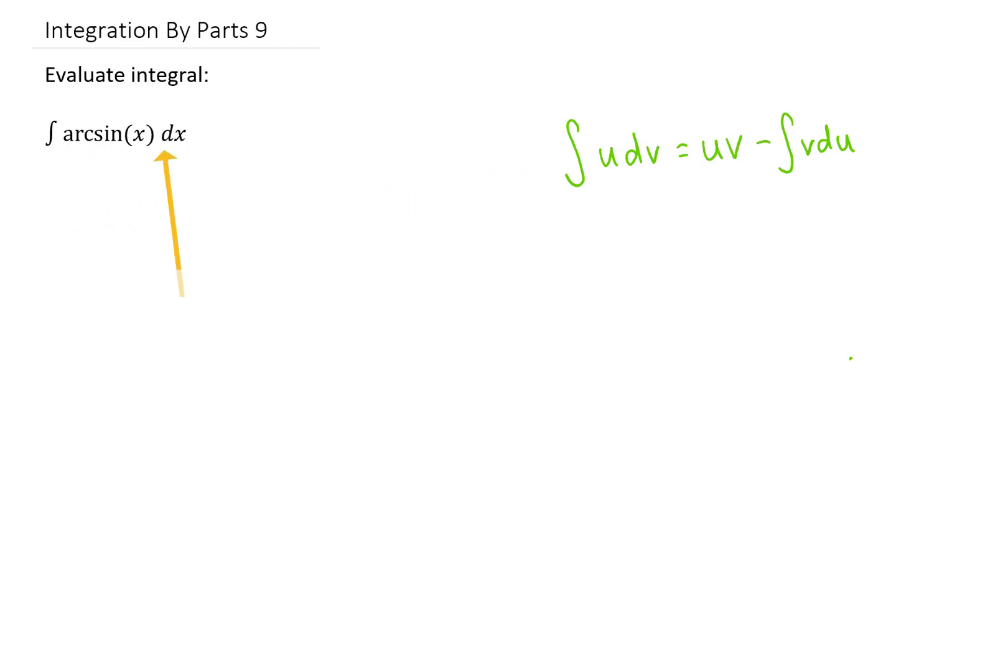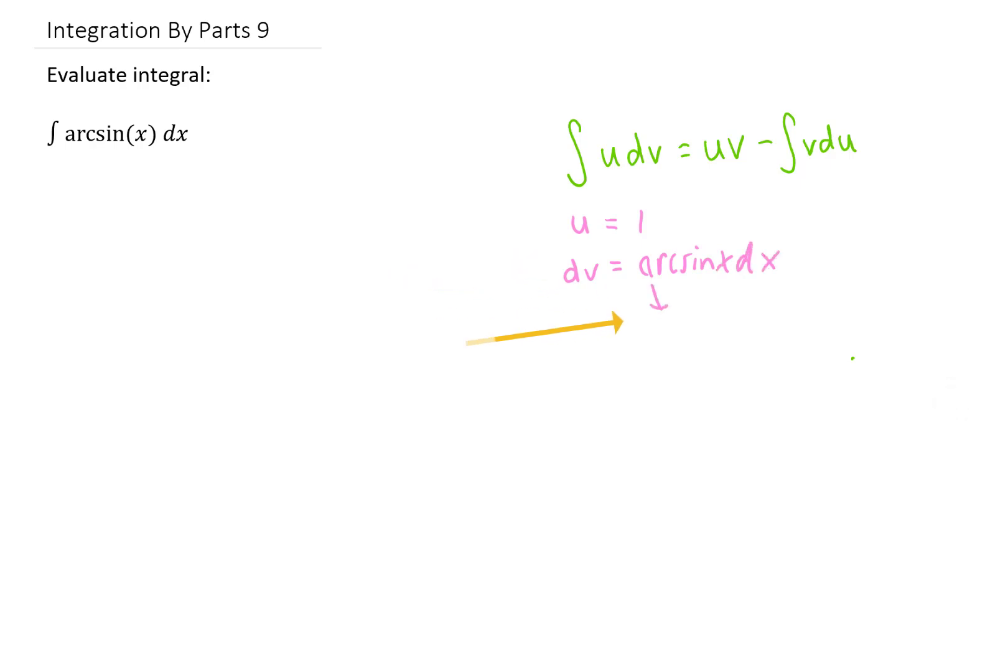Now we only have a couple things to choose from for our u and our dv in this integral. We have arc sine of x, and we have dx. You'll notice that only one of these options really makes much sense. To make this point, I guess we could use u equals 1 and dv equals the arc sine of x dx. Of course, if we wanted to find v, we would need to integrate the arc sine of x dx, and that is the very problem we're trying to solve in the first place. So that doesn't really make any sense.